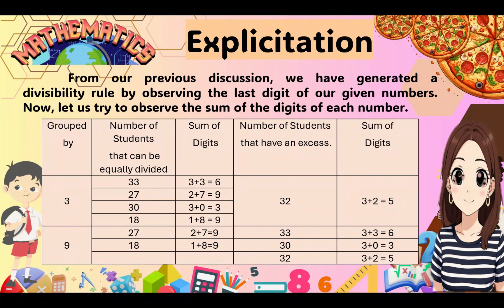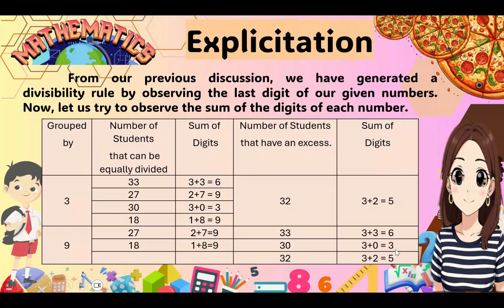If we add the digits of 32, we get 3 plus 2 equals 5. Compared to the divisible numbers, what have you observed? And for numbers that cannot be equally divided by 9, if we add their digits we get: 3 plus 3 equals 6, 3 plus 0 equals 3, and 3 plus 2 equals 5. Notice their sums and compare them with the sums of numbers divisible by 9.